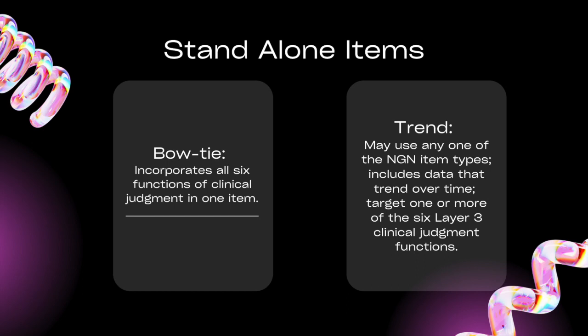Bowtie falls under what's called standalone items, and the bowtie incorporates all six functions of the clinical judgment within one item. There are also trends — many of the NGN style question types include data that trends over time: vital signs, labs, assessments, intake and output, and lots of different things to help us identify trends.